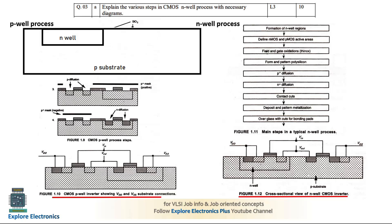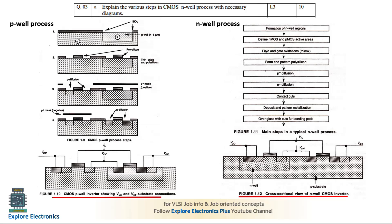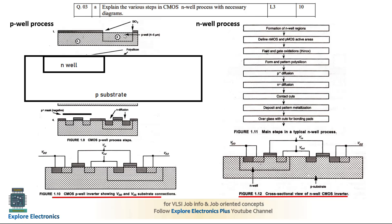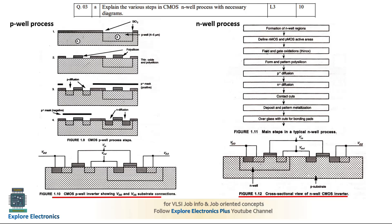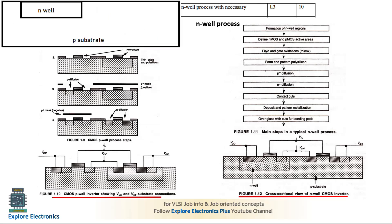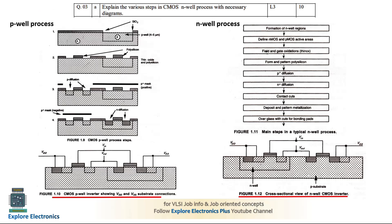In the P-well process, N-substrate is the parent and a P-well is created. For N-well, in the parent P-substrate we need to create the N-well. So in place of N-well we write P-substrate, and in place of P-well we create N-well. We need to diffuse P-diffusion in that place. Create the N-well at the left side keeping the N-substrate representation, and the polysilicon deposition will be the same.